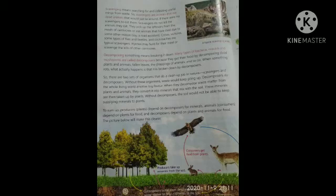Now we will understand decomposing. Decomposing something means breaking it down. Many types of bacteria, molds, and mushrooms are called decomposers because they get their food by decomposing dead plants and animals, fallen leaves, and the droppings of animals. When something rots, what actually happens is that it is broken down by decomposers.